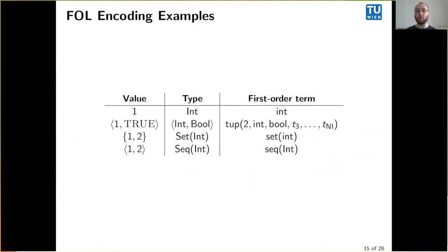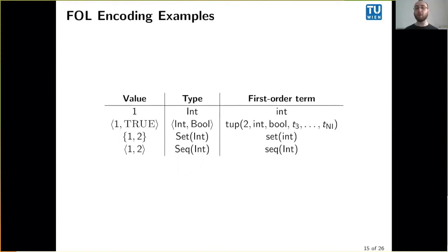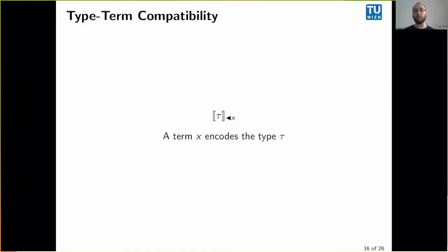Some examples: int is obviously translated into int—the value of int would be encoded as lowercase int. For tuples, for example the tuple of one and true, we encode with the term 'top' which takes more than just the two arguments. It takes the tuple size—known to be two—then int and bool as the types of the first two arguments, plus additional arguments equal to the maximum tuple index in the specification. The recovery then ensures that because the tuple size is two, we only recover the first two fields. Now let's talk about actually encoding types.